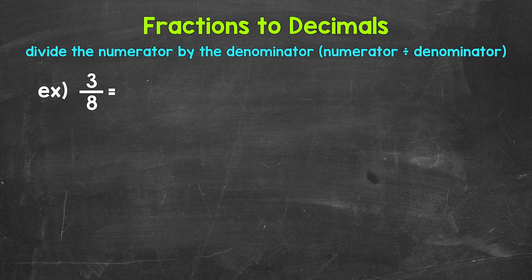When we convert a fraction to a decimal, we can do this by dividing the numerator — the top number of the fraction — by the denominator, the bottom number of the fraction. So for 3 eighths, we can set this up as 3 divided by 8, and now we can go through the division process.